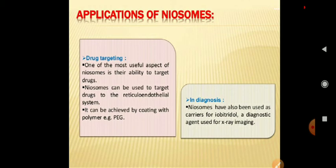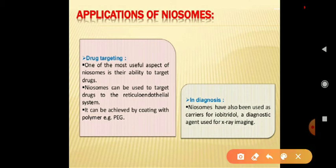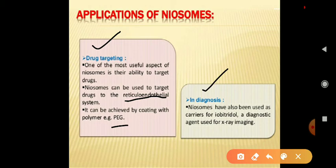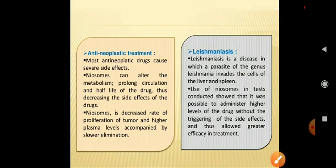Applications of niosomes: Niosomes are used as an effective carrier system for targeted drug delivery. One of the most useful aspects of niosomes is their ability to target drugs. Niosomes can be used to target drugs to the reticuloendothelial system, achieved by coating with polymers such as polyethylene glycol. Niosomes are also used in diagnosis — for example, as carriers for iobitridol, a diagnostic agent used for X-ray imaging.